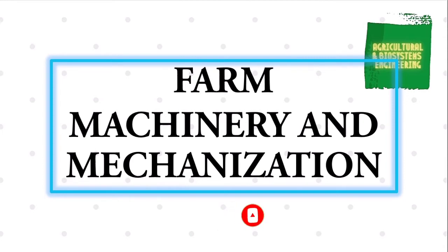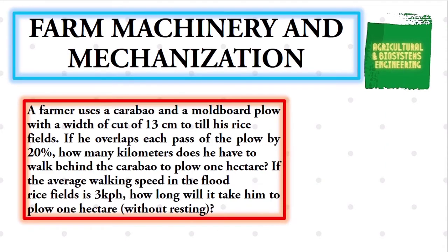This time, we will be solving this problem. A farmer uses a carabao and a moldboard plow with a width of cut of 13 centimeters to till his rice fields. If he overlaps each pass of the plow by 20%, how many kilometers does he have to walk behind the carabao to plow one hectare?